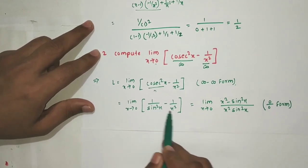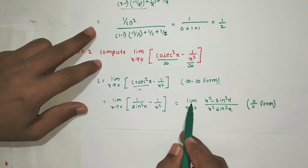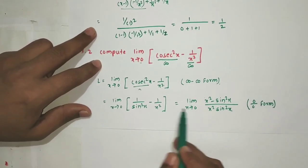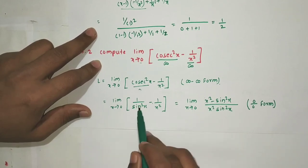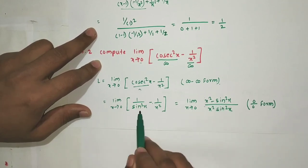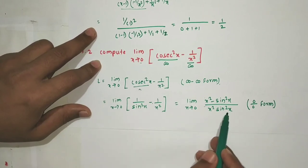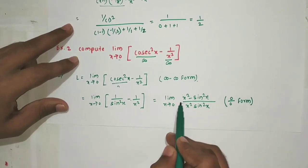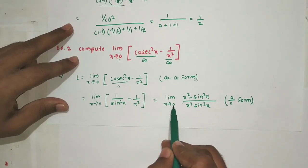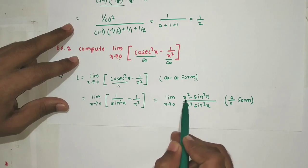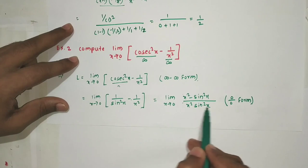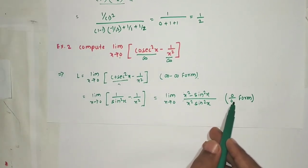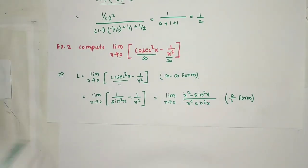After cross multiplication, we get [x² - sin²x] / [x²·sin²x]. Putting the limiting value x=0: numerator gives 0 - 0 = 0, and denominator is also 0. So this is 0/0 form.